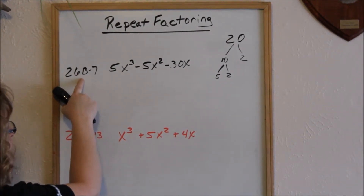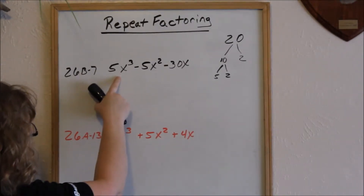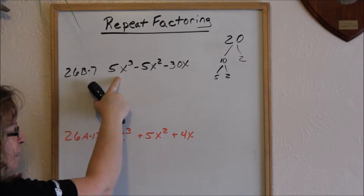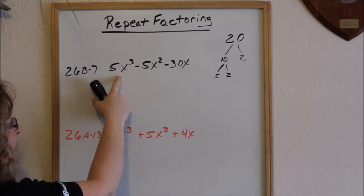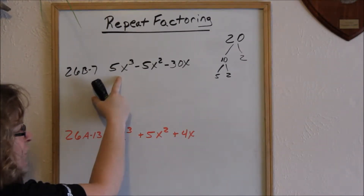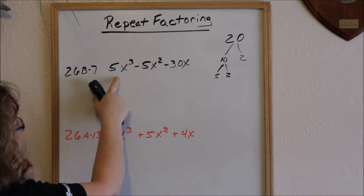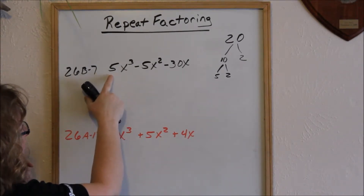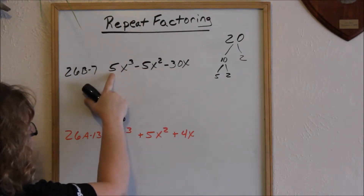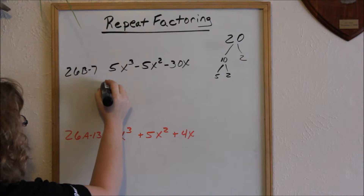Looking at problem 26B7, we have this trinomial. The first thing you always want to do any time you're factoring is look to see if you can factor something out — instead of going straight to two binomials, look to see if you can factor something out first. Looking at the numbers 5, 5, and 30, I can see I can factor out a 5 out of everything.